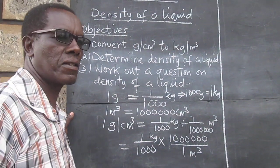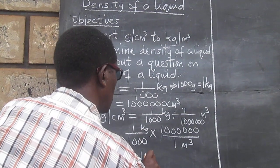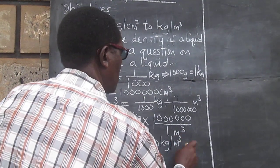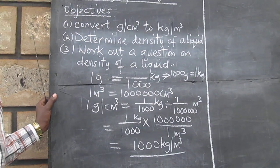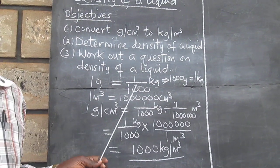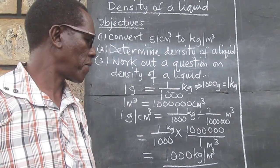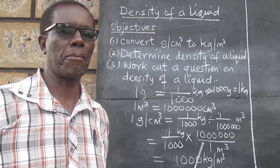When we simplify this we get, therefore, one gram per cubic centimeter is equivalent to a thousand kilogram per meter cubed.